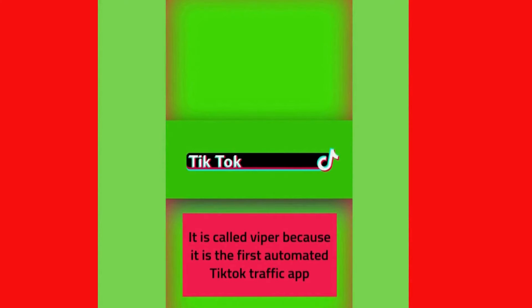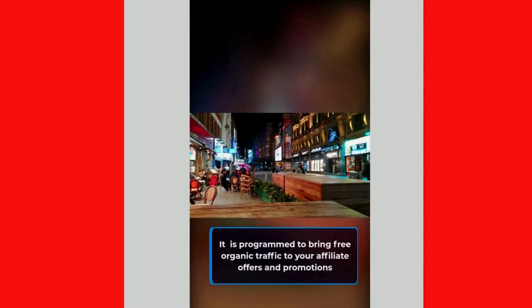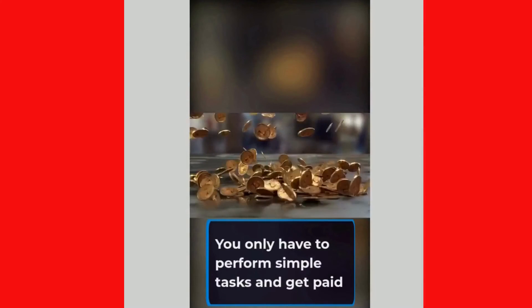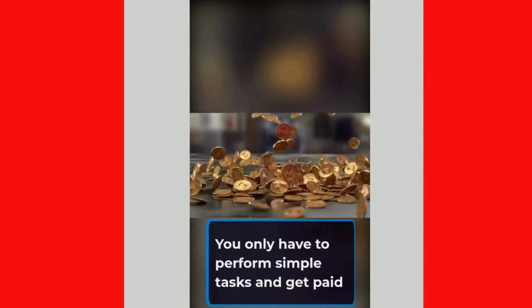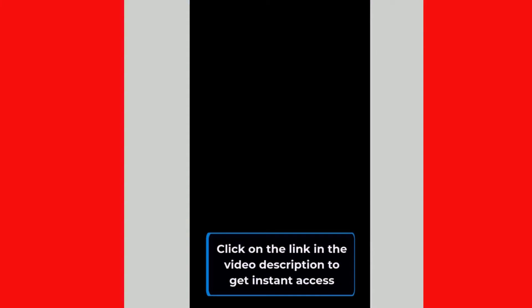Viper Software: it is called Viper because it is the first automated TikTok traffic app. Take advantage of it and grow your TikTok audience. Click on the first link in the video description to get instant access. Click Home Income App is programmed to bring free organic traffic to your affiliate offers and promotions — perform simple tasks and get paid. Click on the link in the video description to get instant access.